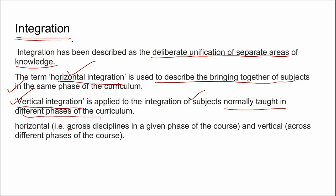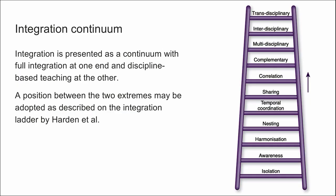So across disciplines in a given phase of the course is horizontal integration and across different phases of the course, it is the vertical integration. People call this integration as a spectrum. This ladder is called as Harden's ladder of integration or integration continuum.